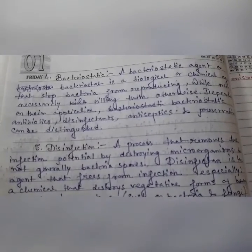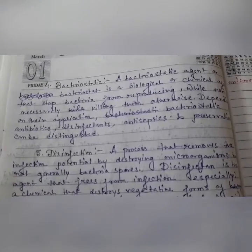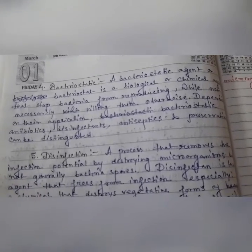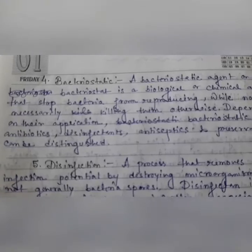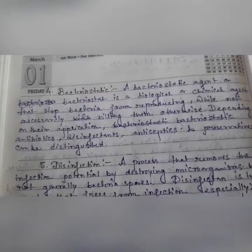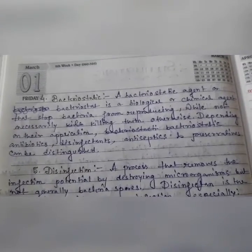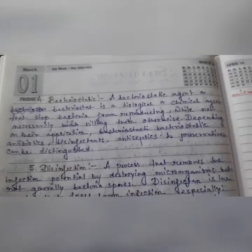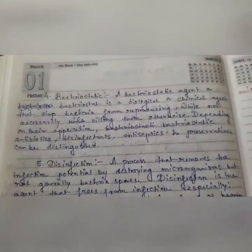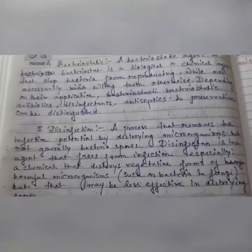Another definition: bacteriostatic. A bacteriostatic agent or bacteriostat is a biological or chemical agent that stops bacteria from reproducing. Bacteriostatic agents help to stop or arrest the growth of microorganisms without necessarily killing them. Depending on their application, bacteriostatic antibiotics, disinfectants, antiseptics and preservatives can be distinguished.